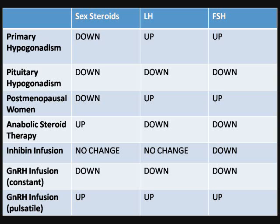For pituitary hypogonadism, which is secondary, there is no LH and no FSH, resulting in decreased sex steroids, decreased LH, and decreased FSH. For post-menopausal women, the ovaries have no follicle, there is a decrease in estrogen, and there is an increase in both LH and FSH.